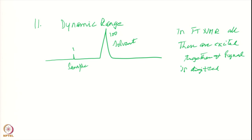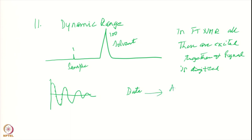The FID represents the superposition of all signals at every data point, so each point must represent this sum correctly. The data is digitized via a device called the analog-to-digital converter, also called the ADC, which collects data in binary form because that is what the computer understands.